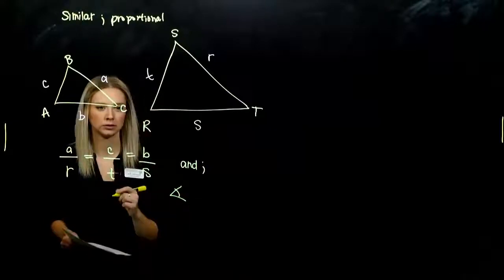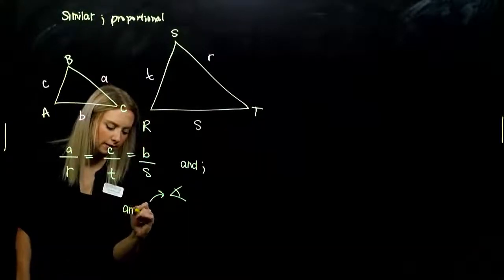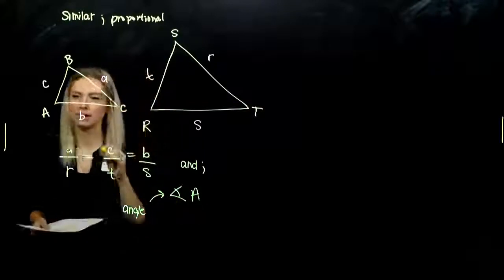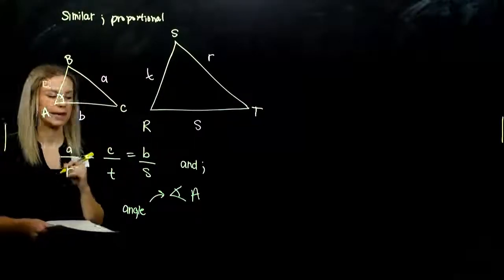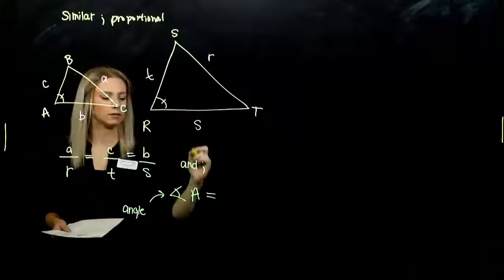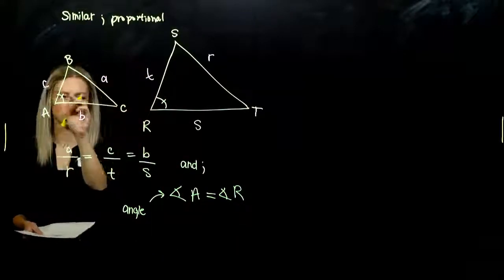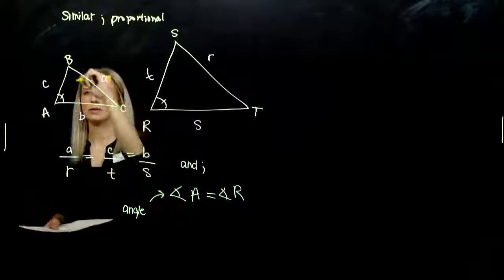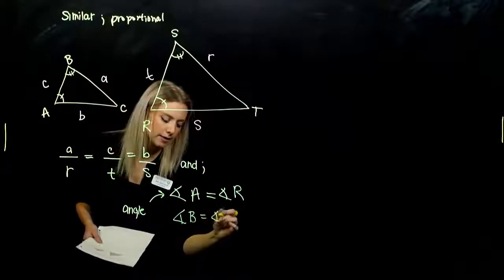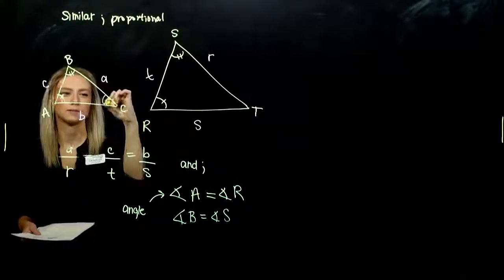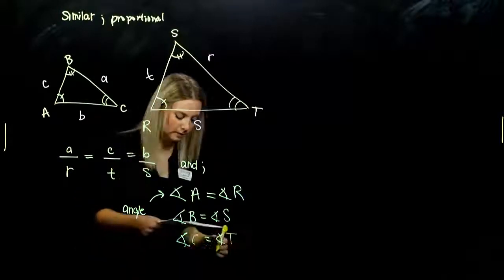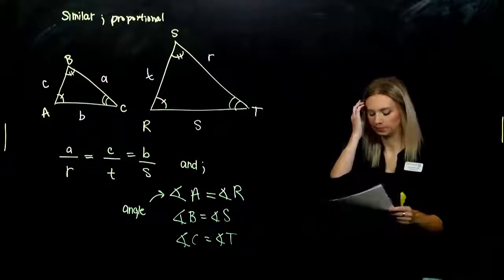We say angle, represent it with that little symbol, so we don't have to write out the word angle every single time. If I'm looking at angle cap A, this angle right here, it is going to be the same as angle R in my larger triangle. They have to be exactly the same measure, so I get the same shape. Angle B is going to be the same as angle S. And very last, angle C is the same as angle T. So we have that relationship.